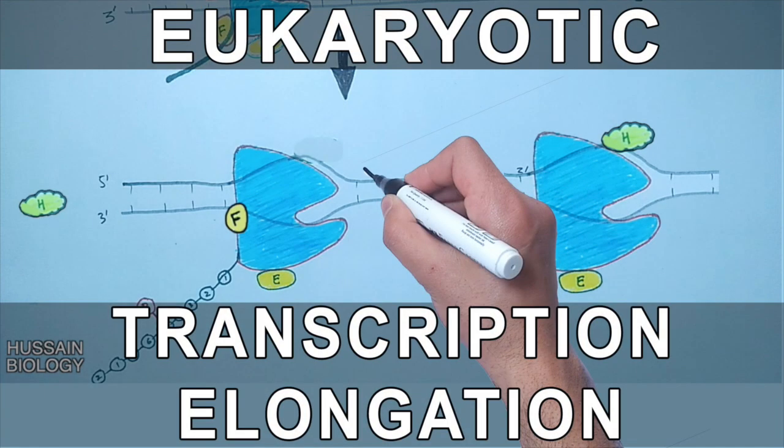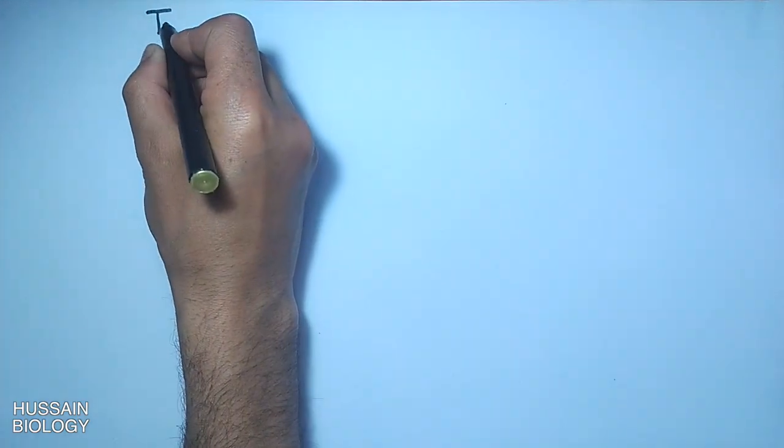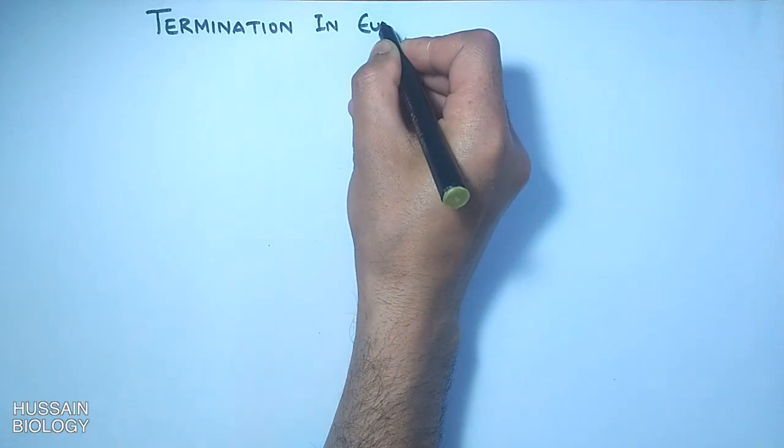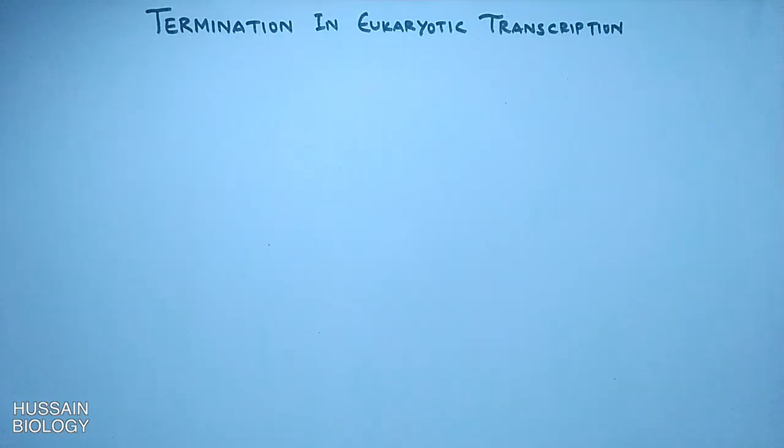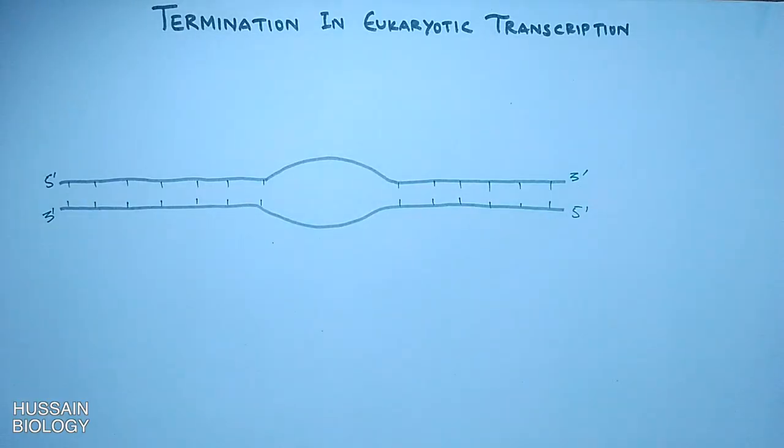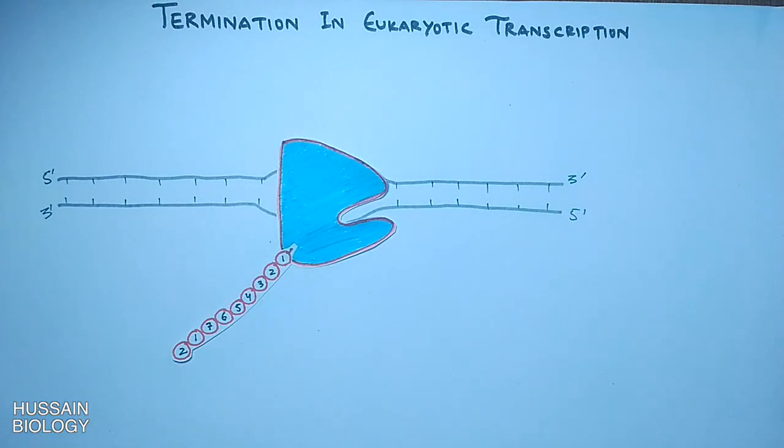In the previous video we discussed transcription elongation in eukaryotes. Now this video will follow up with transcription termination in eukaryotes. First, let's get to the elongation step where we see the mRNA molecule has been synthesized.